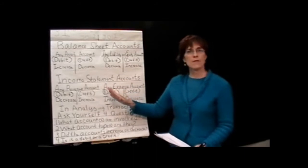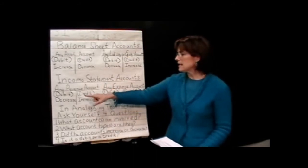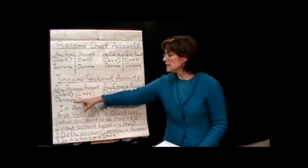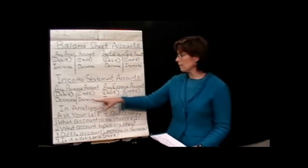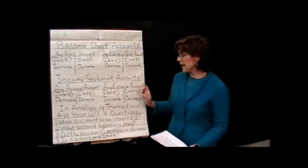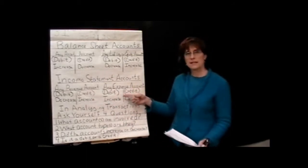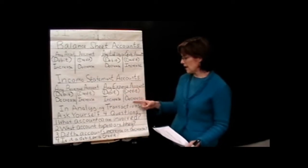For any revenue accounts, the debit side is the decreased side. The credit side, which is the right side, is the increased side. And with any expense accounts, the debit side is the increased side, and the credit side on the right is the decreased side.